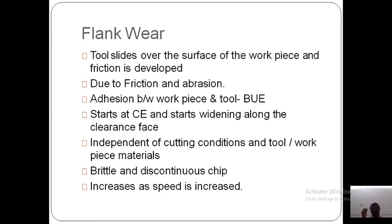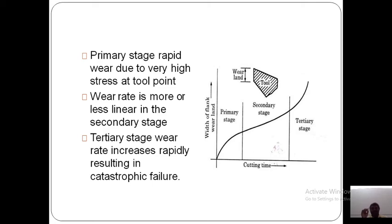Flank wear occurs because the tool slides over the surface of the workpiece and friction develops. Flank wear is mainly caused by friction and abrasion, with abrasion and adhesion between the workpiece and tool causing build-up edge formation. From the diagram, there are three stages: primary stage — rapid wear due to high stress at the tool point; secondary stage — wear rate is more or less linear; and the tertiary stage, which leads to catastrophic failure.